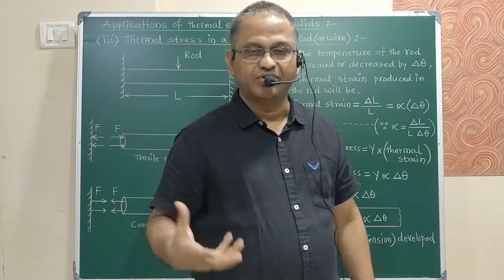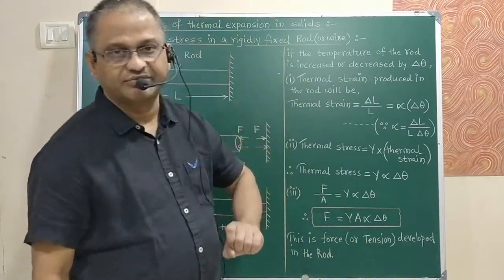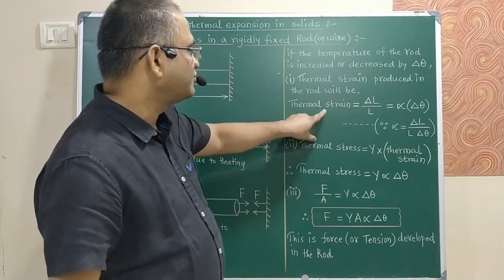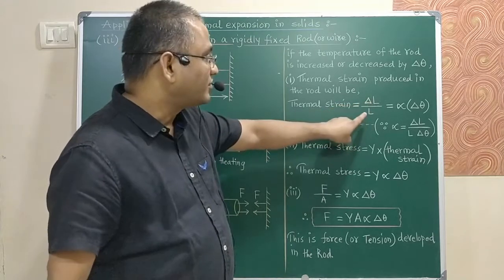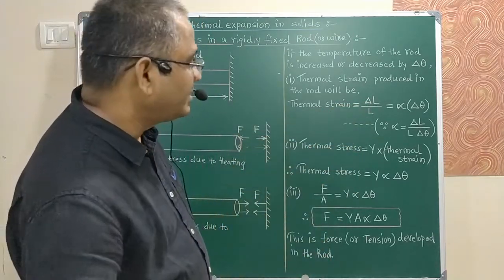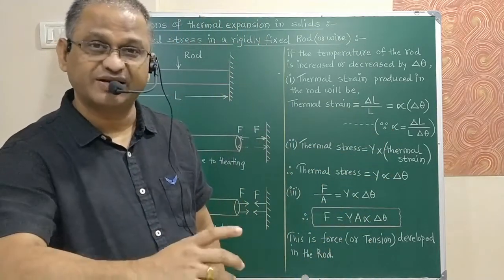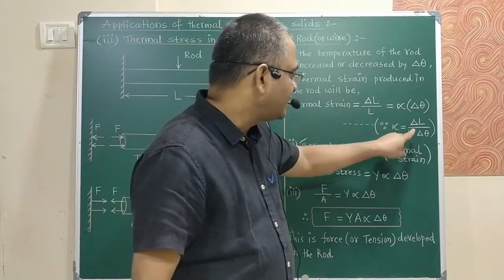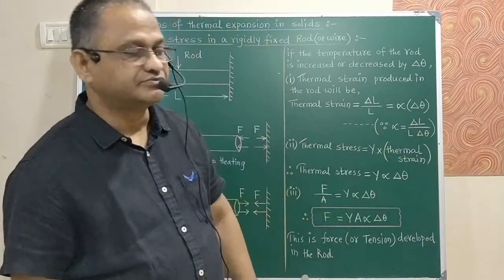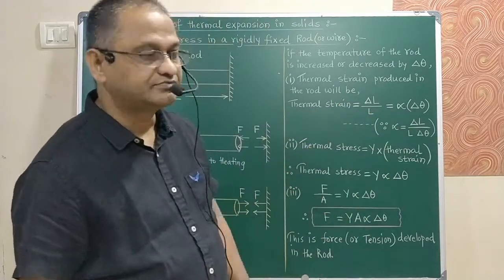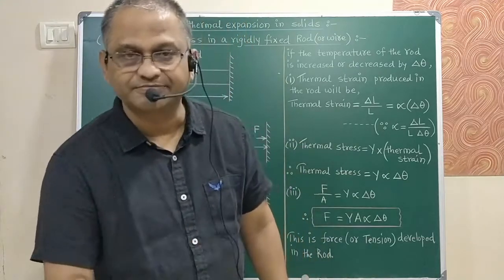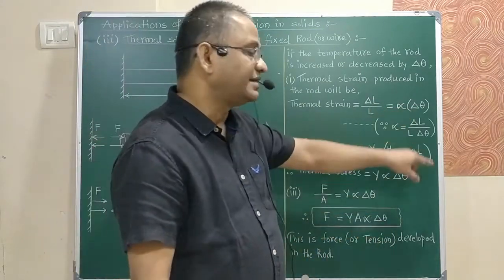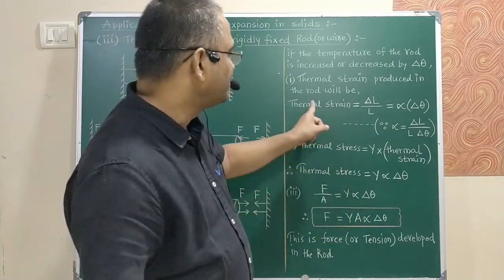To calculate thermal strain: strain is change in length upon original length, so thermal strain = delta-L / L. From the definition of alpha, delta-L / L = alpha × delta-theta. Therefore, thermal strain = alpha × delta-theta.